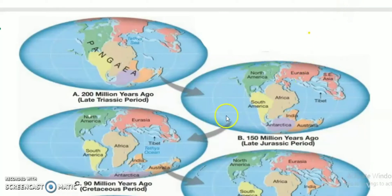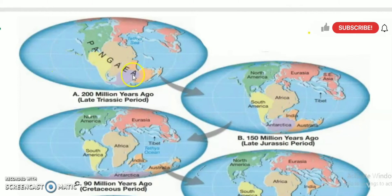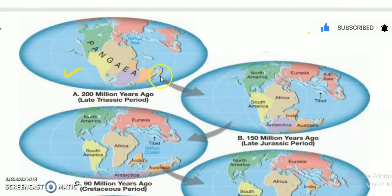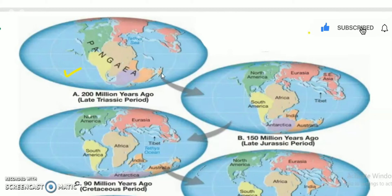Hey guys, in this very short video we will understand how Pangea breaks up into different parts. If you haven't watched my previous videos, please go through them so you can understand this. Pangea is the large supercontinent, and as discussed in previous videos, around 200 million years ago it started to break up.